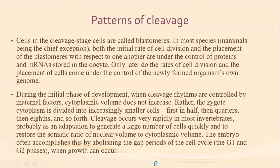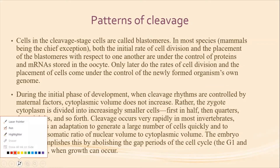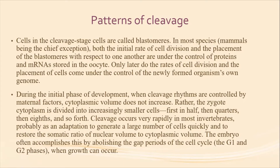Cells in the cleavage stage are called blastomeres. In both species, with the exception of mammals, both the initial rate of cell division and the placement of the blastomeres with respect to one another are under the control of proteins and mRNA stored in the oocyte. Only later do the rates of cell division and the placement of cells come under the control of the newly formed organism's own genome.